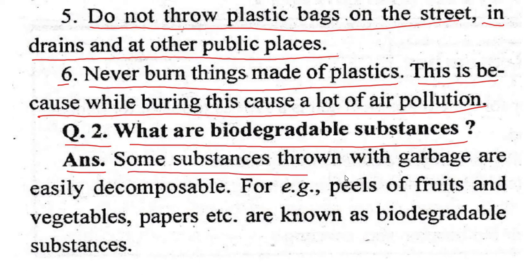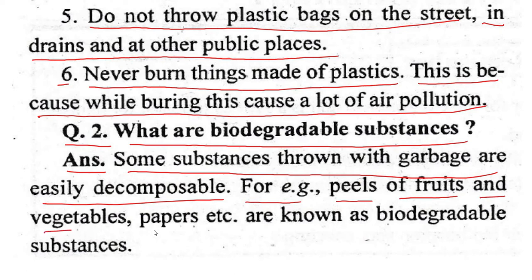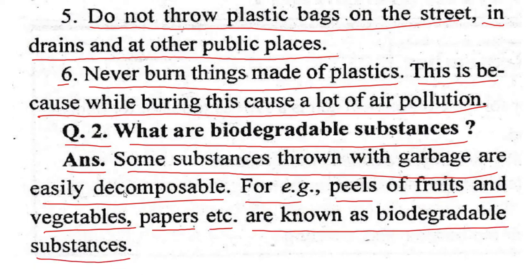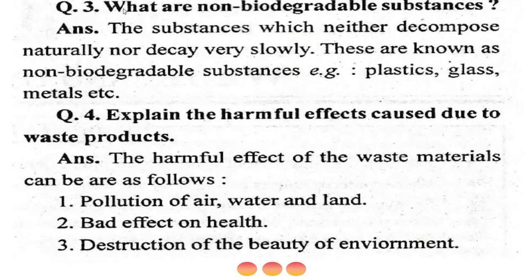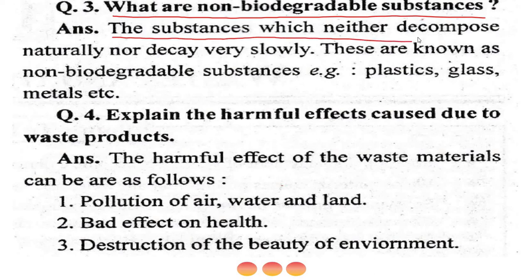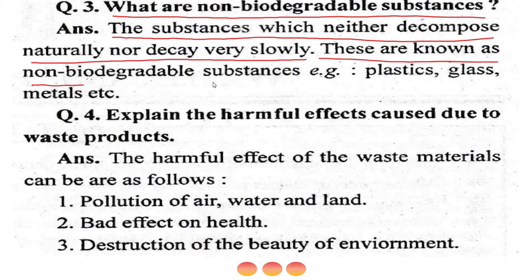Some substances thrown with garbage are easily decomposable — for example, peels of fruits and vegetables, paper, etc. These are known as biodegradable substances. Substances which neither decompose naturally nor decay, or decay very slowly, are known as non-biodegradable substances. Examples include plastic, glass, and metals.